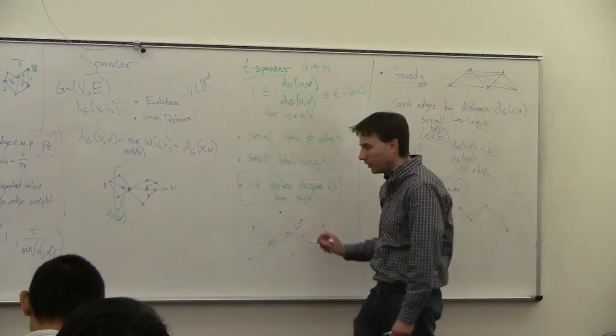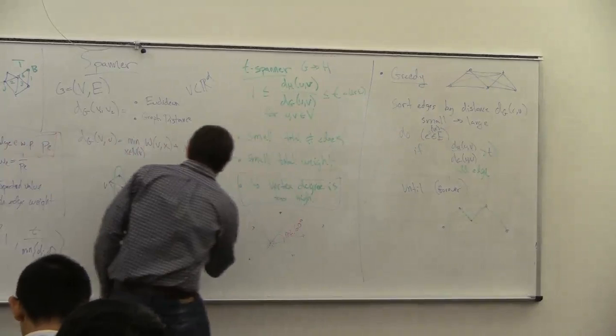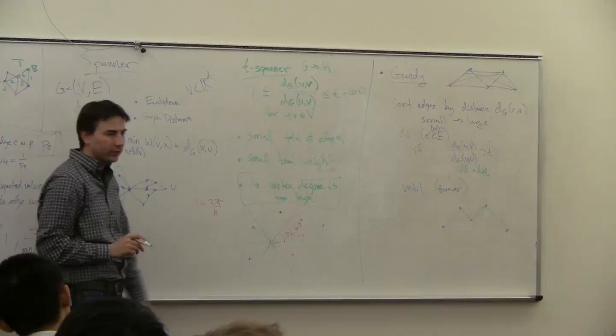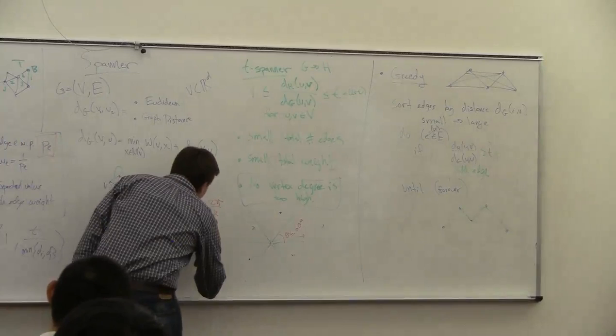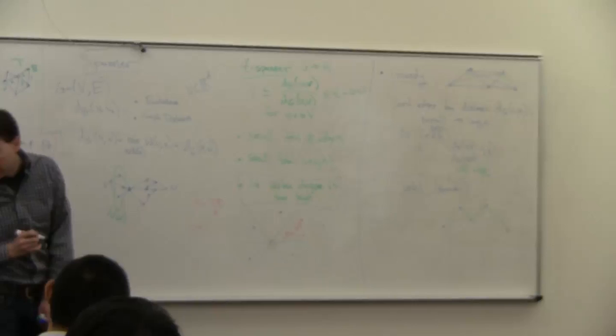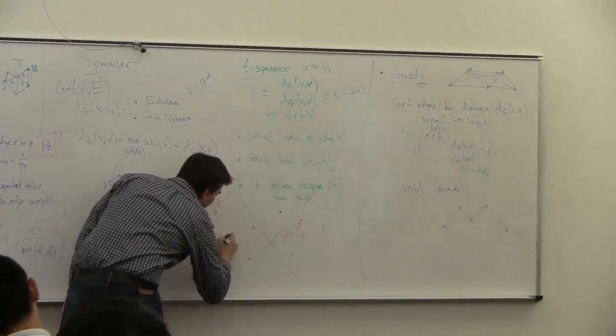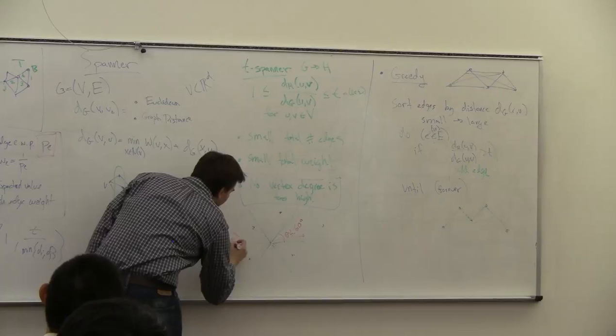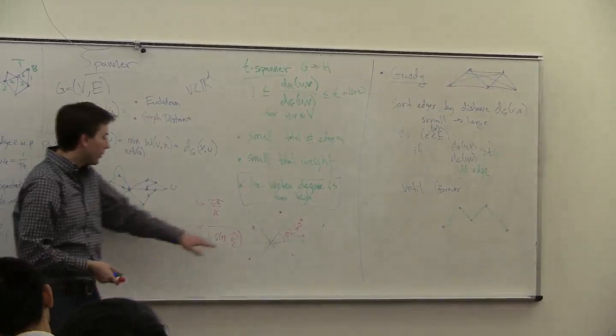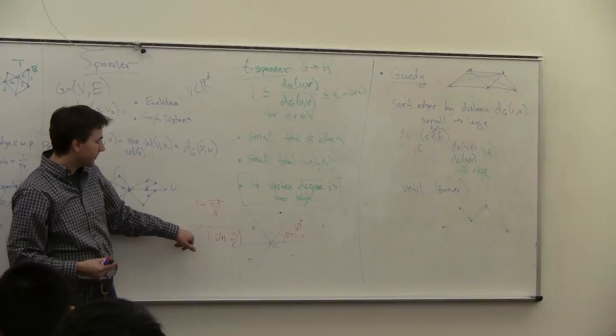And then, so if I set theta equals to 2 pi over k, so I get k of these wedges, then I'm going to get a t-spanner with t equal to 1 over 1 minus sine of theta over 2. So, not to worry about this exactly, but as you make the angle smaller, you get a smaller and smaller t, so you get a better and better approximation.